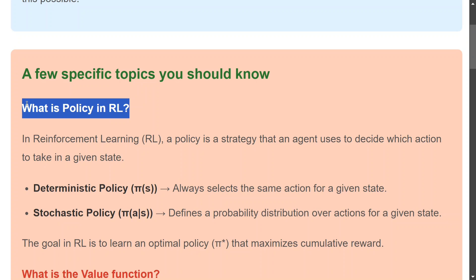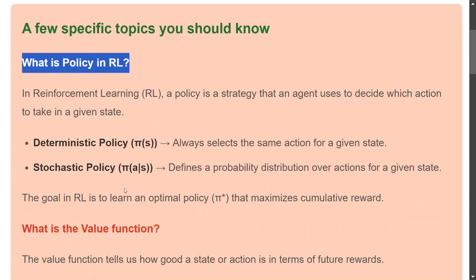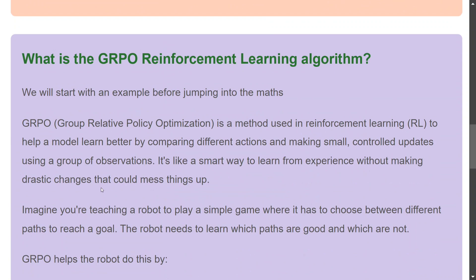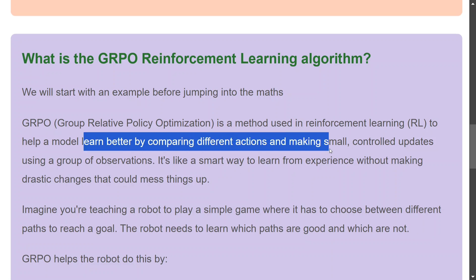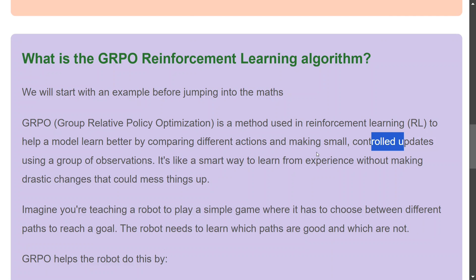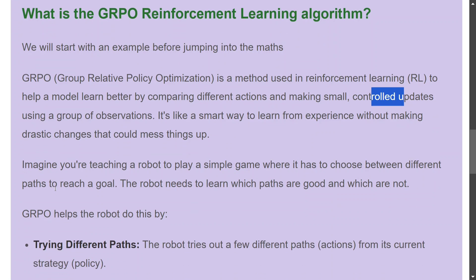This is how reinforcement learning works. I suggest you give it a brief read, but those are the basics. Now, coming to GRPO — Group Relative Policy Optimization. It is an algorithm to improve the policy algorithm we were talking about. It helps the model learn better by comparing different actions and making small, controlled updates using a group of observations. We will first understand it by example and then jump to the mathematics.